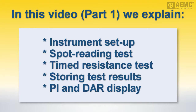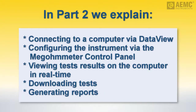We begin by describing how to set up the instrument for testing. We then demonstrate two commonly used methods for testing insulation resistance: the manual spot reading test and the timed resistance test. We also describe how to store results in the instrument, and show how to display polarization index and dielectric absorption ratio values, both of which are automatically calculated by the instrument. In Part 2 of this series, we discuss using the Model 1060 with DataView, AEMC's data analysis software.